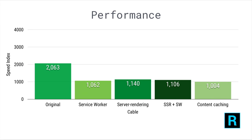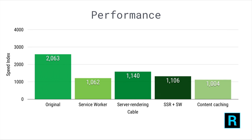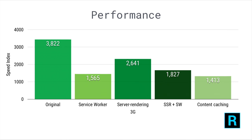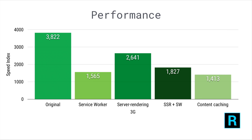Here's where we ended up. We started off in a place where, on cable, we had a speed index of 2,063. By the time we'd added Service Worker, server-side rendering, and content caching techniques together, we got to a speed index of almost 1,000 — close to perfect. On 3G, where it's even worse, we started off with a speed index of almost 4,000, and we end up in a place where, with Service Worker caching and content caching, we've got a speed index of 1,400.